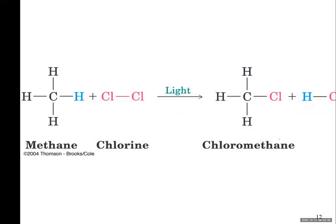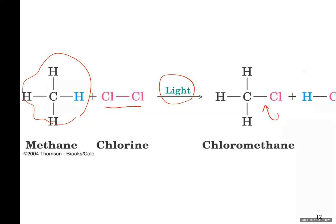Take a look at this example. This is methane, natural gas. If you react it with chlorine in the presence of light, and that's the catalyst. You make chloromethane and hydrochloric acid. There is a Cl here which is being hidden by my surface probe, but this is Cl.